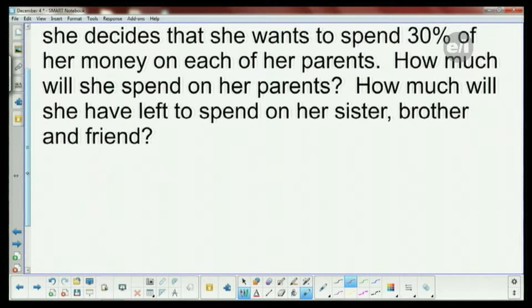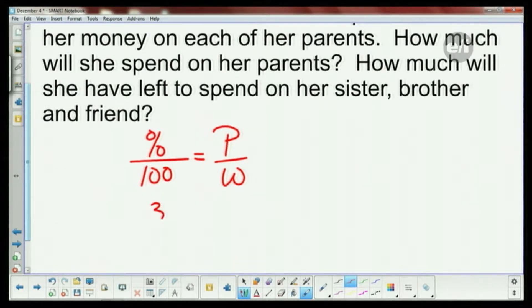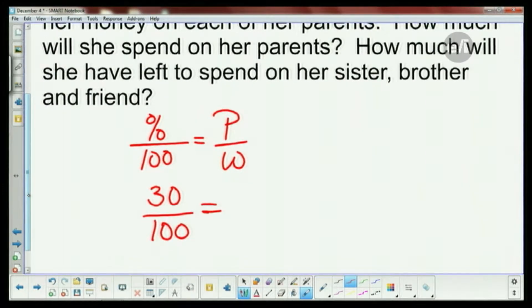Well, this is the same formula. Remember, you have your percent over 100 is equal to your part over your whole. So my percent is 30%, and I don't really need the percent sign—let's get rid of that. It's equal to—we're trying to find out the part, how much she will spend on her parents and how much she'll have left. She has $120 total.